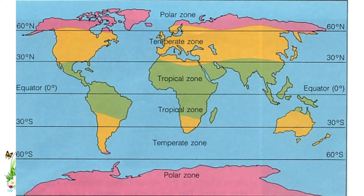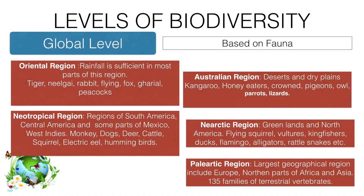These are the different zones of the world based on climate. Based on fauna — that is, animals — the world is divided into five different regions. The Oriental region has high and sufficient rainfall throughout most of the region.